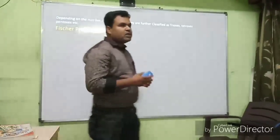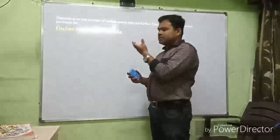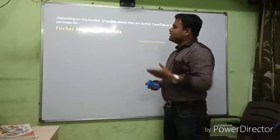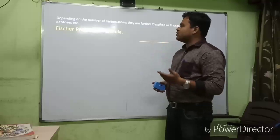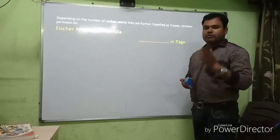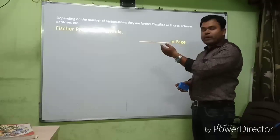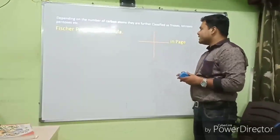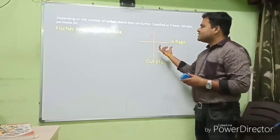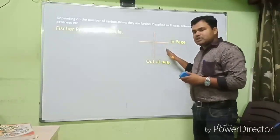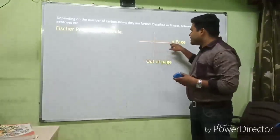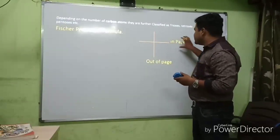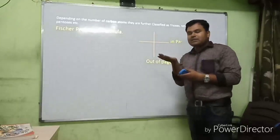We are going to discuss the Fischer projection formula, used to represent the three-dimensional structures of carbohydrates in two dimensions. In Fischer projection, there are two lines: a horizontal line and a vertical line. The horizontal line represents bonds going into the page, and the vertical line represents bonds coming out of the page.